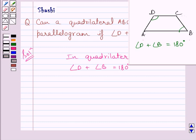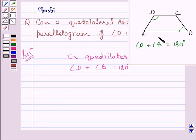We have to find if ABCD is a parallelogram. According to the property of a parallelogram, opposite angles of a parallelogram are equal to each other — that is, they are of equal measure. The information given to us is not sufficient to decide if quadrilateral ABCD is a parallelogram.